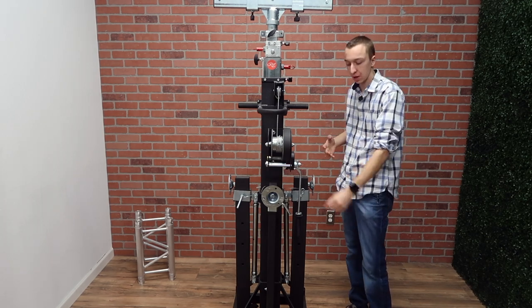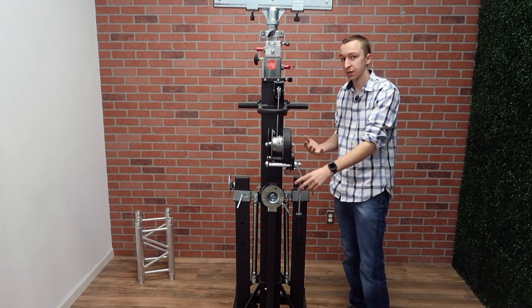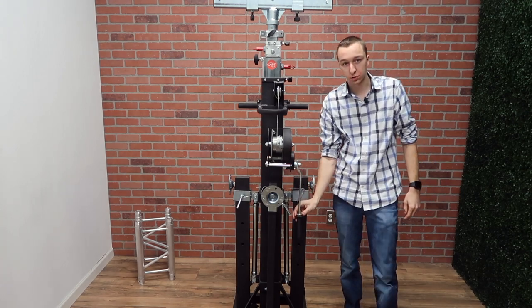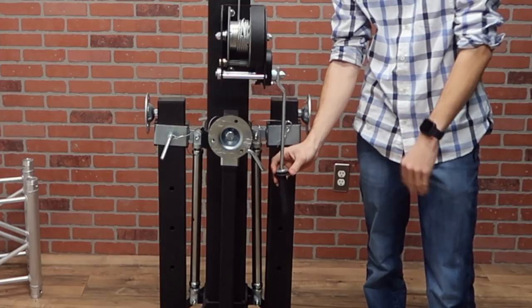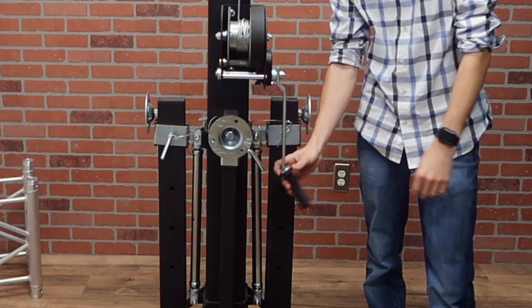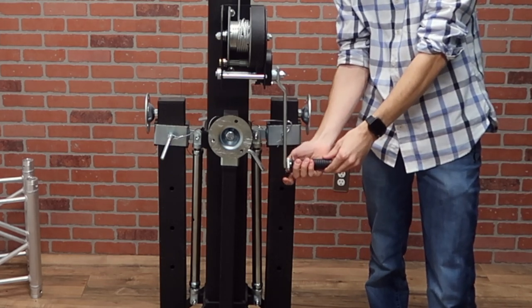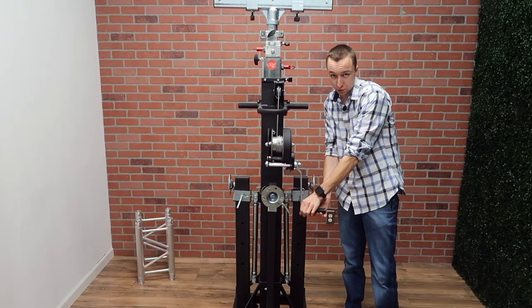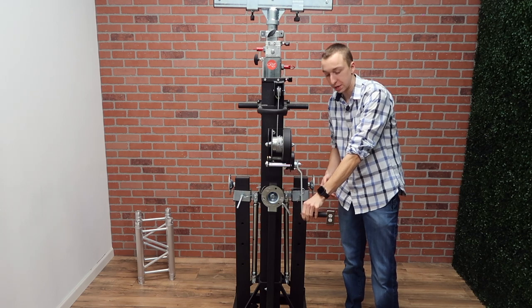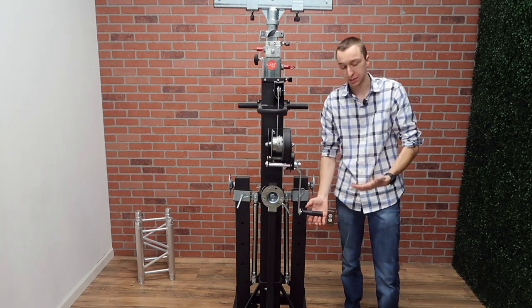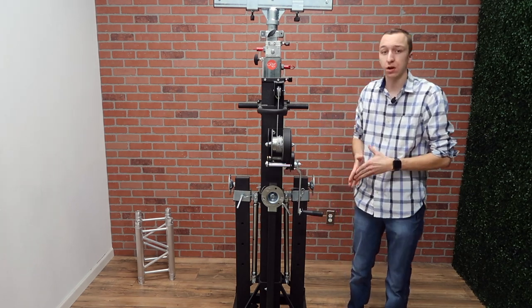The first thing to do when you're starting to open up this crank stand would be the crank handle itself. It does store down straight, that's to protect it. What you're going to want to do is loosen this here, lift the crank handle to the side, and then tighten it back up. You are going to want to transport it always pointing straight down just to prevent this from breaking off because it is a plastic handle.